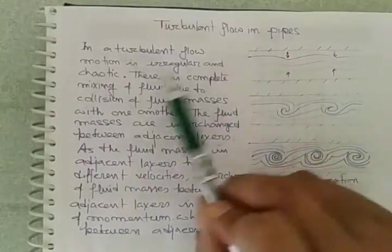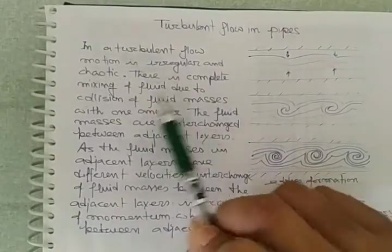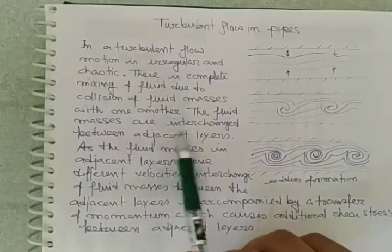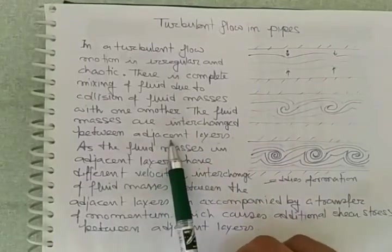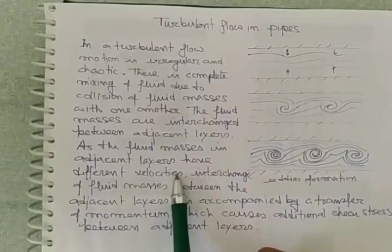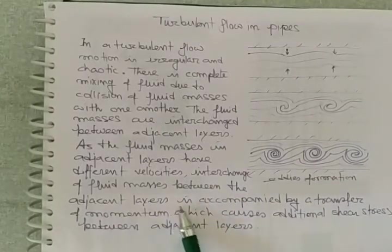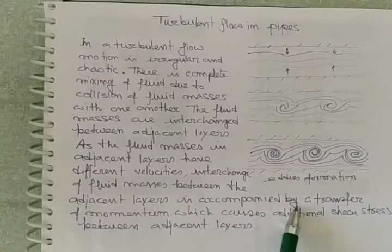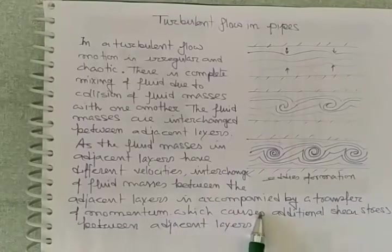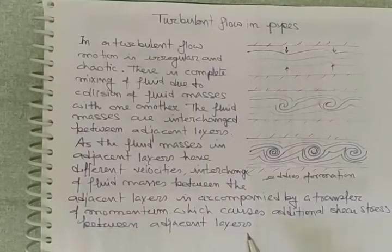In a turbulent flow, motion is irregular and chaotic in nature. There is complete mixing of fluid due to the collision of fluid masses with one another. The fluid masses interchange between the adjacent layers. As the fluid masses in the adjacent layer have different velocities, the interchange of the fluid masses between the adjacent layers is accompanied by a transfer of momentum.